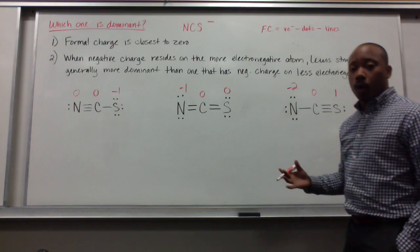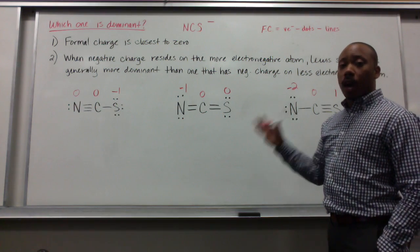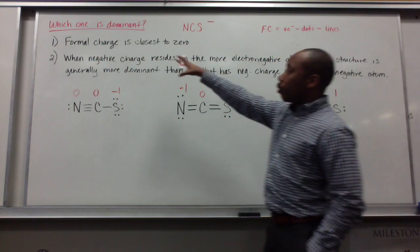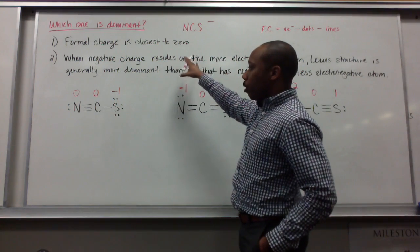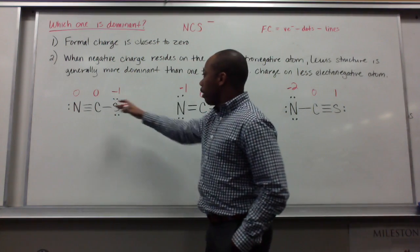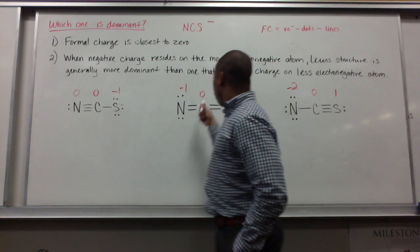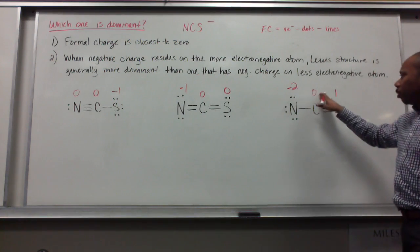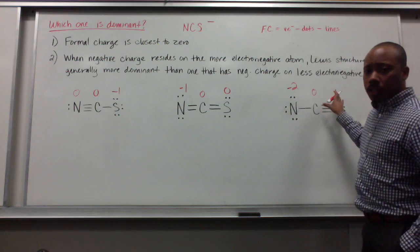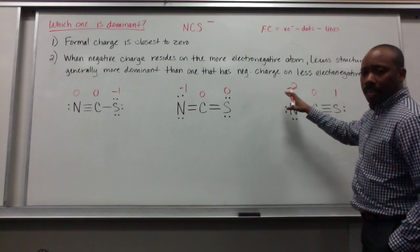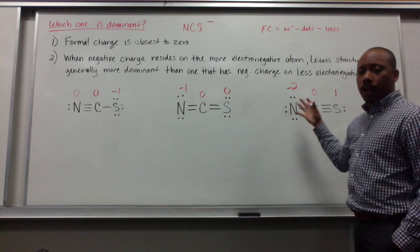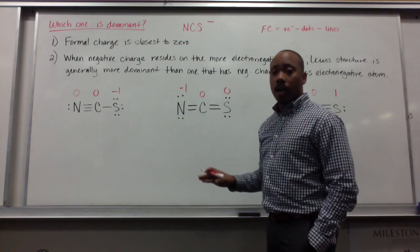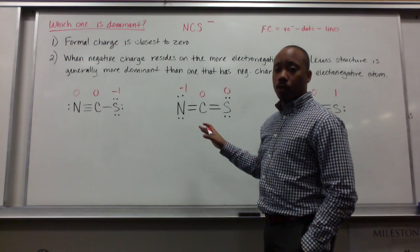Now to determine which one is the most dominant Lewis structure, we apply the rules. Formal charges closest to zero: the first structure has two zeros and a negative one, the second also has two zeros and a negative one — those look good. The third structure has negative two, zero, and one — those are further away from zero. So the first and second structures are more toward dominance.